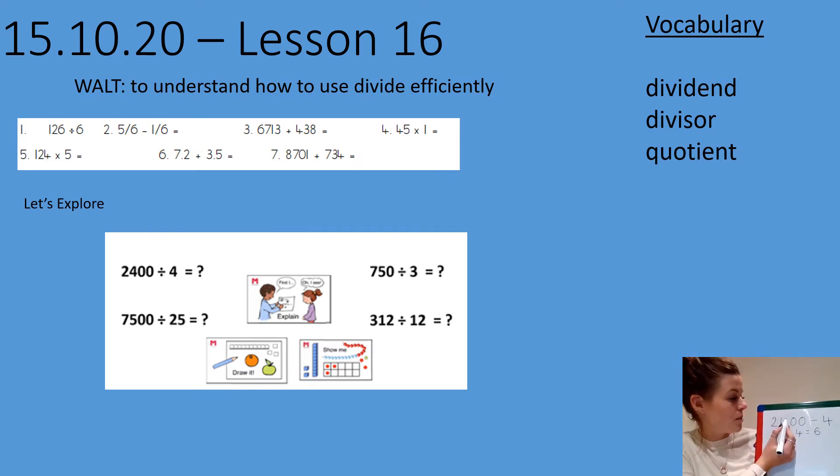Well, I want to slowly work up to that becoming 2400. So I might move to 240 divided by four. I've made my dividend 10 times larger. And because my divisor stayed the same, my quotient has been made 10 times larger again. But then I'm going to keep going because I've got 24 made 10 times larger. I'm going to make that 10 times larger again to 2400 divided by four. And my quotient needs to be made 10 times larger too.